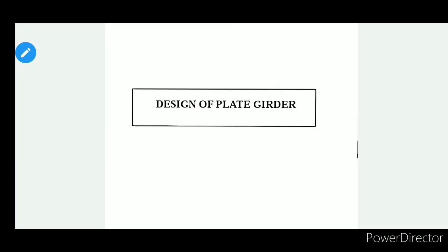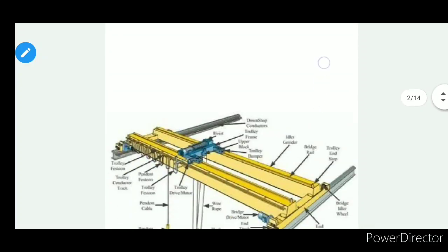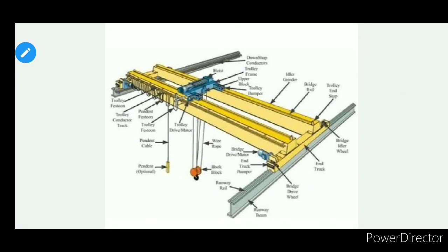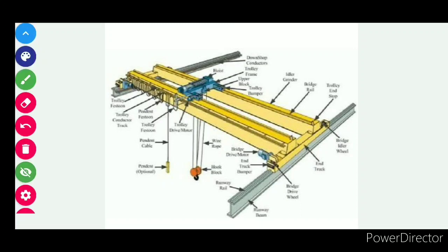I want to show you the picture of a gantry girder first. A gantry girder is a beam — specifically, a beam which supports the crane girder. Now I am saying plate girder — it must also be a beam, yes it is a beam, but what kind of differences are there? What is the difference between the gantry girder and plate girder? We already designed the gantry girder, so why are we designing the plate girder separately? There is a difference.